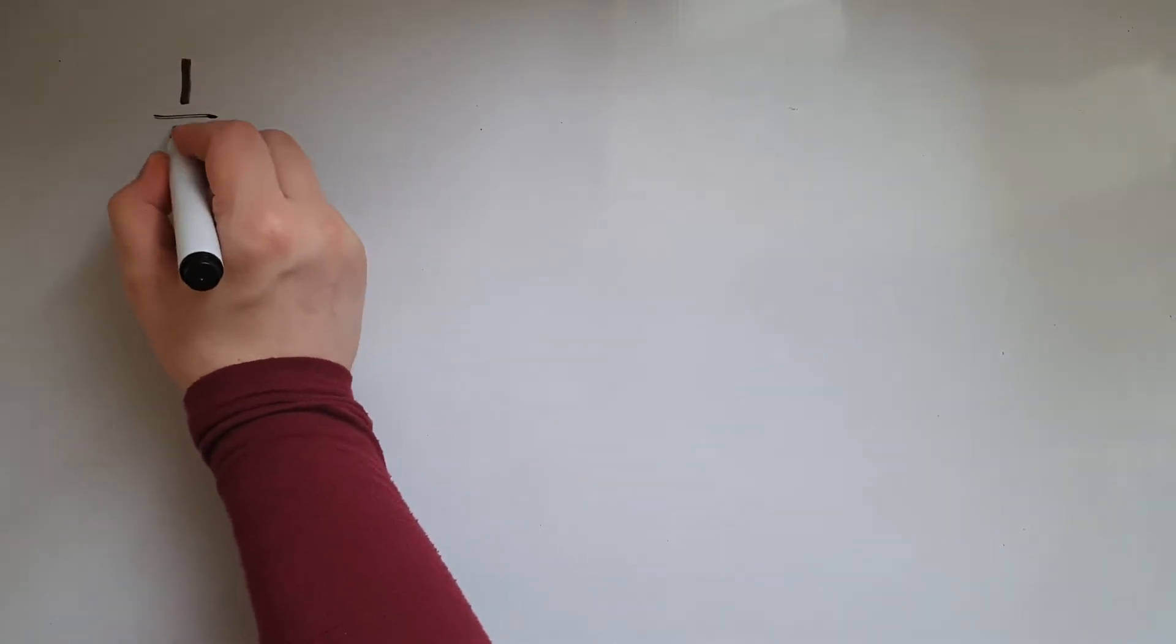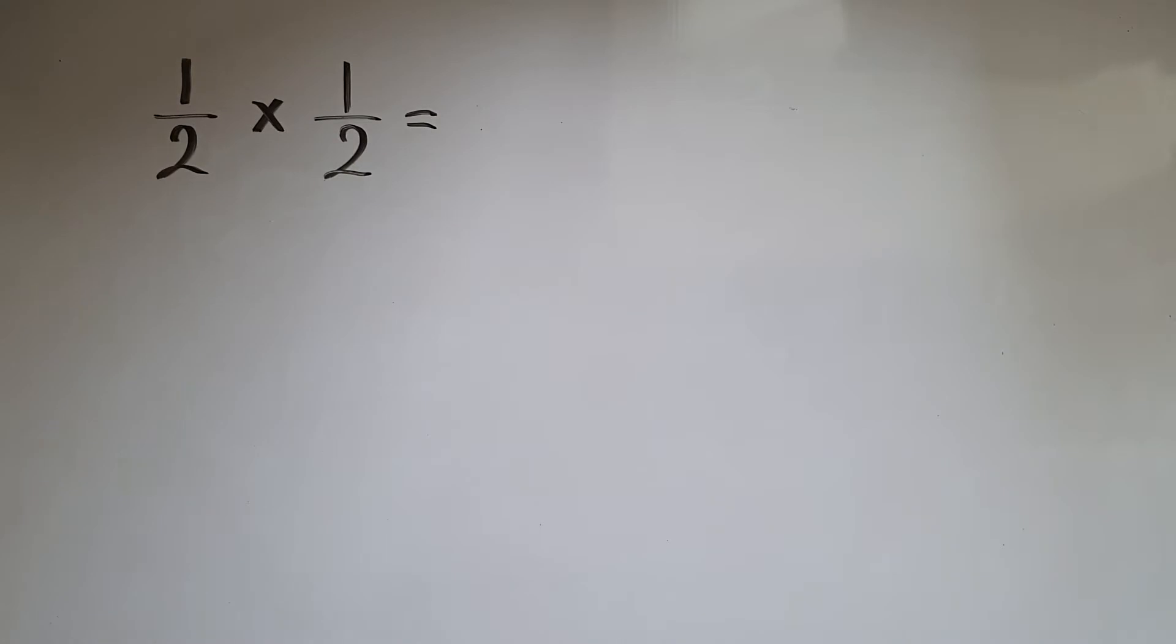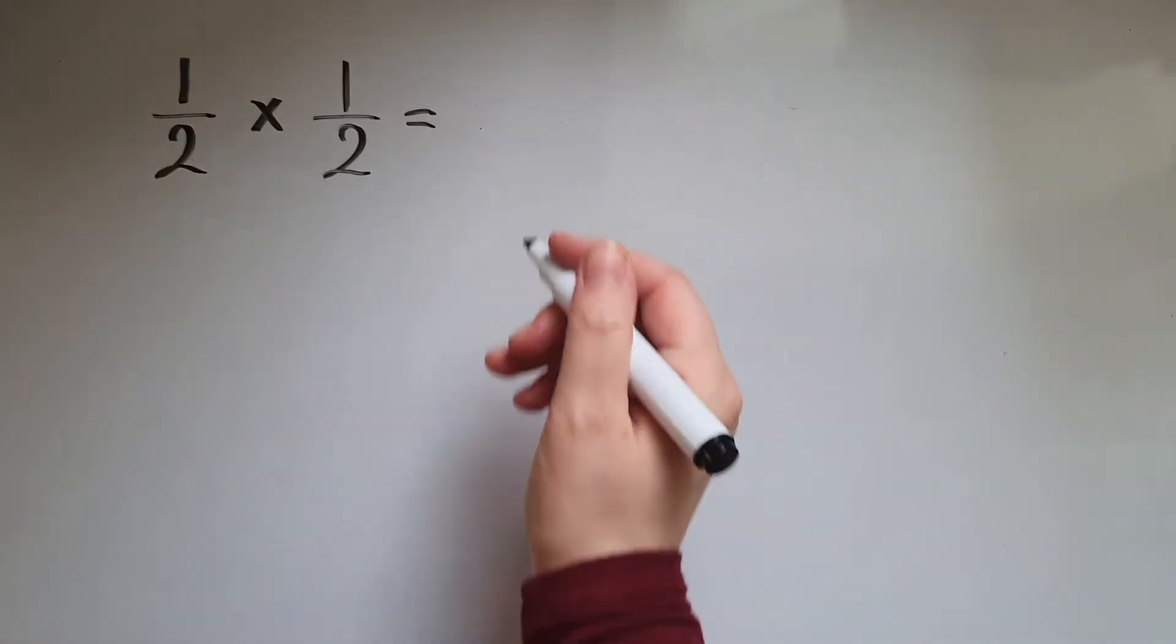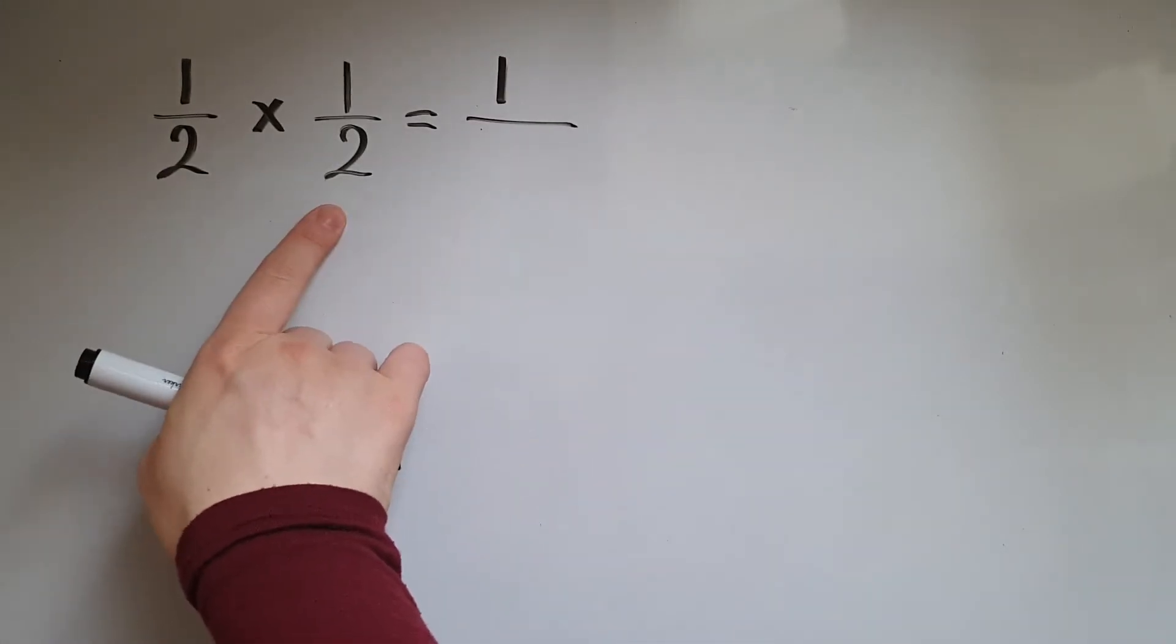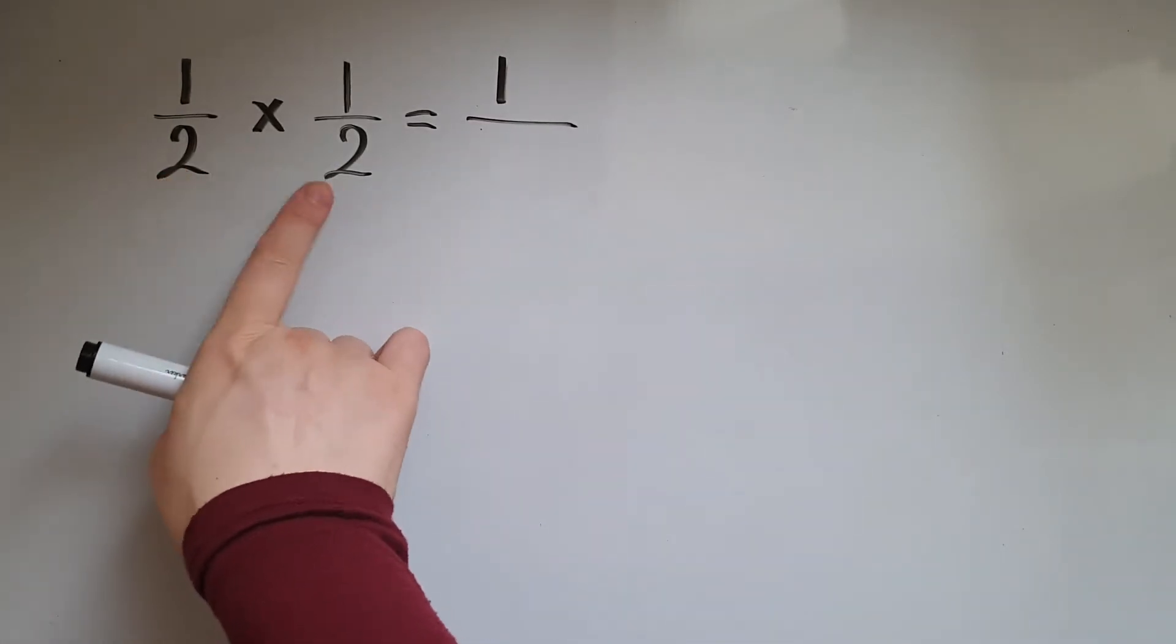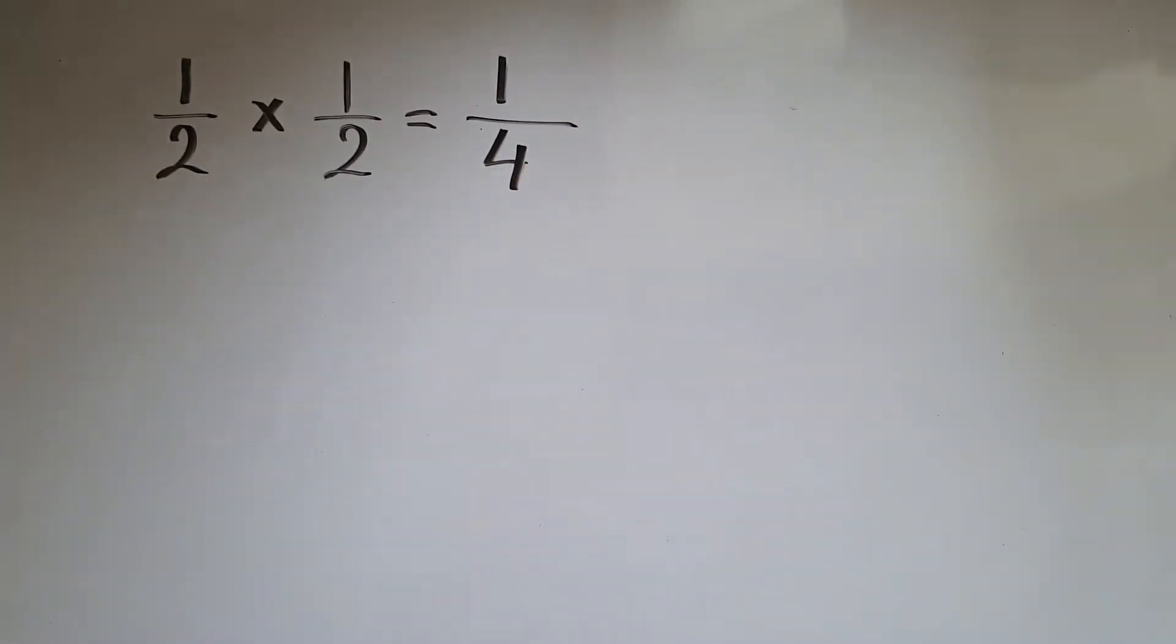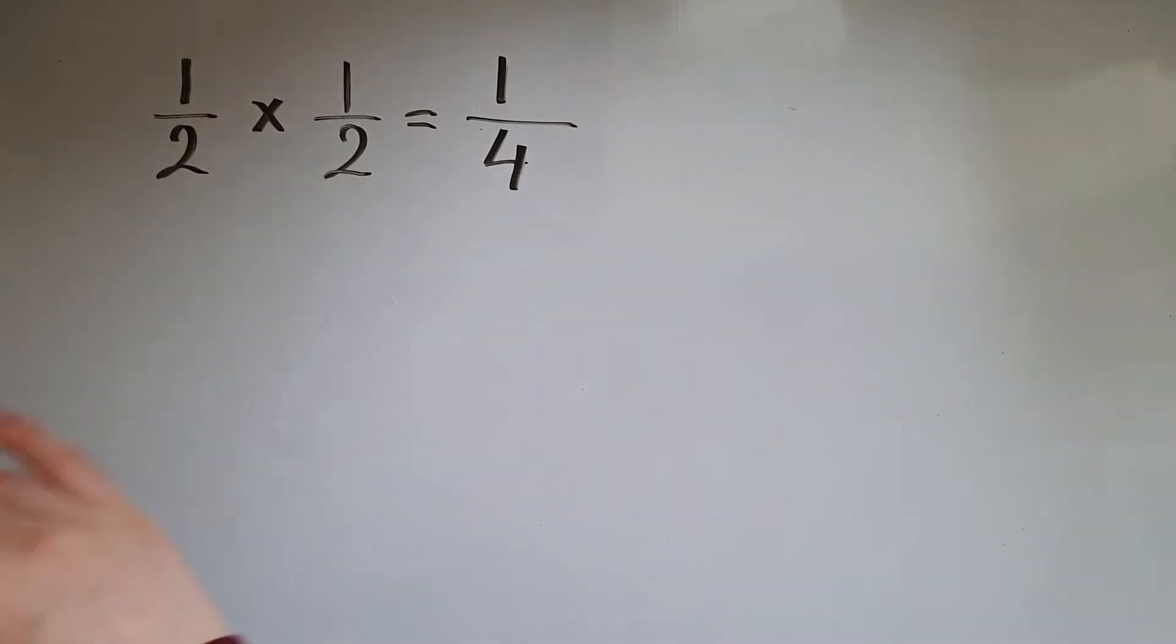So if I have half times half, it's a case of multiplying the two numerators, the two numbers at the top. One times one gives us one, multiplying the two numbers at the bottom, the denominators, so two times two gives us four. So it's always a case of just multiplying top numbers and multiplying bottom numbers.